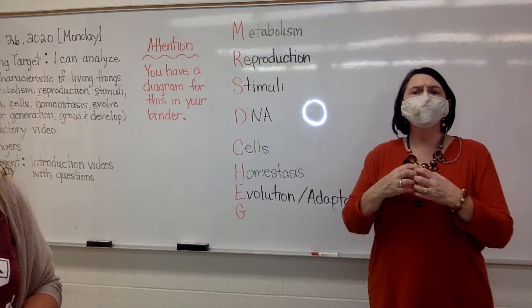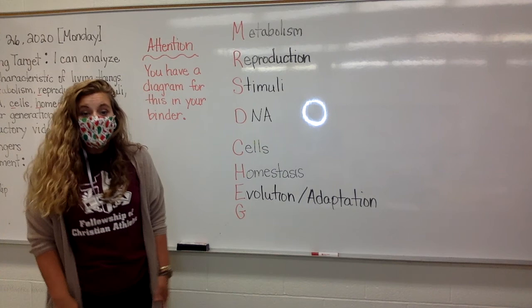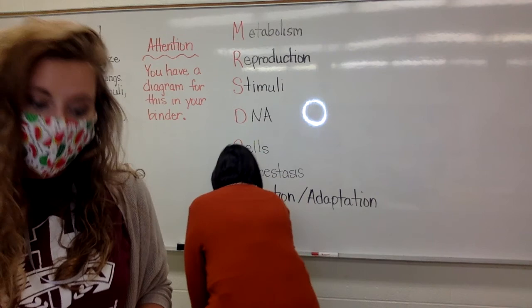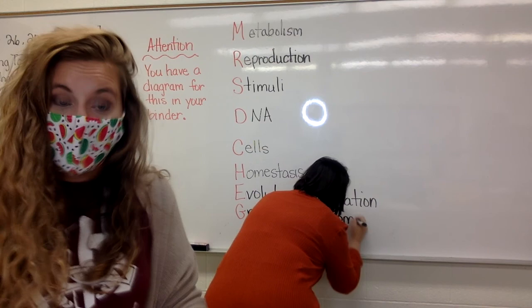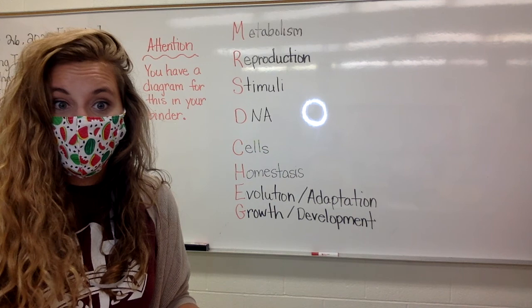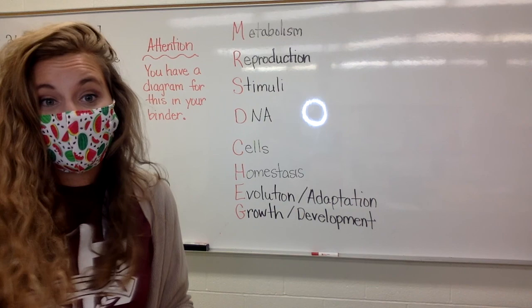The last one that we have is G. G is meant to be growth and development. It is very important that as a living thing you're able to mature over time. In elementary school you talked about life cycles — how an egg was able to grow into a chick and into a chicken. These are maturity — going from the small baby version to a more mature version. Growth and development is very important for the lifespan of a living thing.